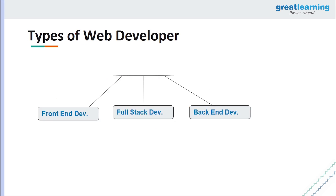Let's look at the types of web developers. You can become a full stack developer, a front end developer, or a back end developer. In this tutorial, we're focusing on full stack development, which covers both front end and back end. You can also choose to specialize in a particular language, like becoming a JavaScript developer or Python developer.